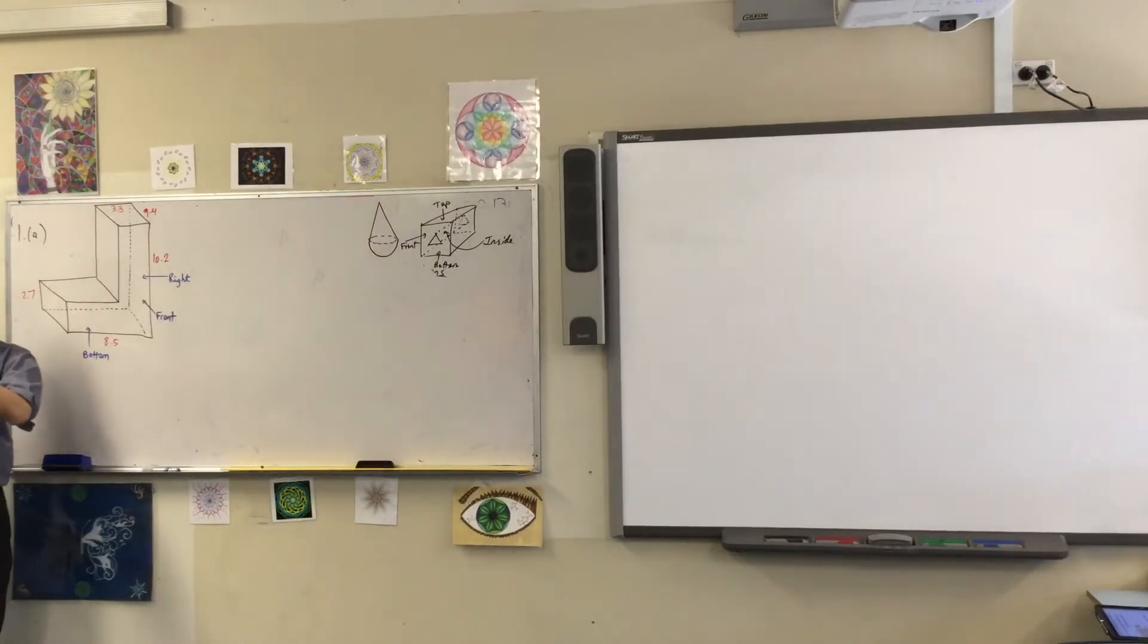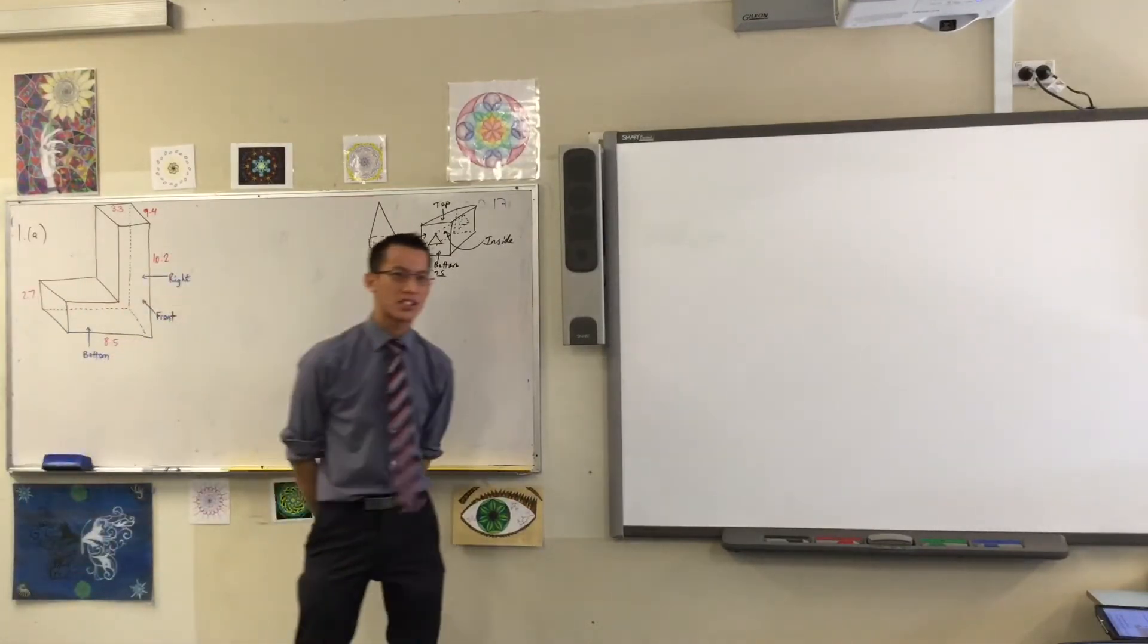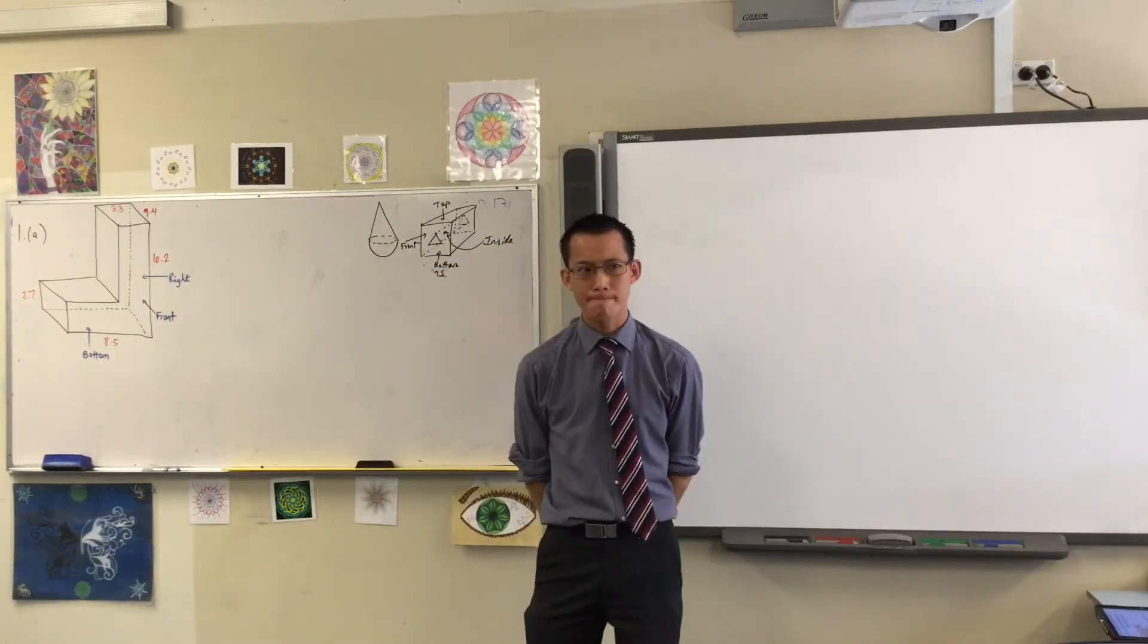Have a look. Do you see I've labeled three of the faces? The bottom, the front, and this right-hand side one. How many faces are left to label? Five. Count carefully.